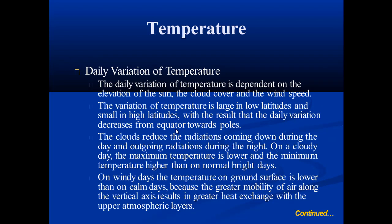Daily variation of temperature is dependent on the elevation of the sun, the cloud cover, and the wind speed. The variation of temperature is large in low latitudes and small in high latitudes, with the result that daily variation decreases from the equator towards the poles. Variation is also large in low altitudes and small in high altitudes.